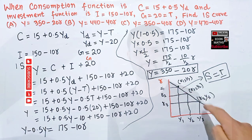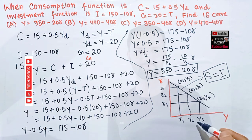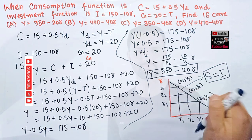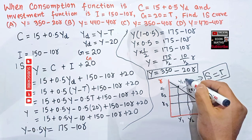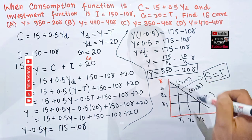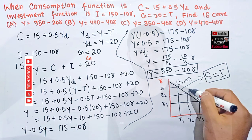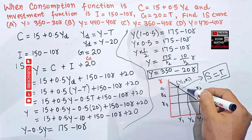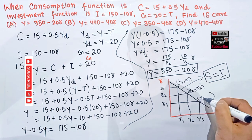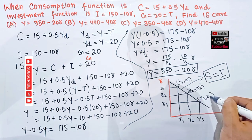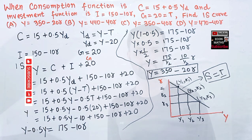On the IS curve, we note the notation should place the income axis variable first: so combinations are written as (Y1, R1), (Y2, R2), (Y3, R3). I hope I made myself clear in this video. Thank you.